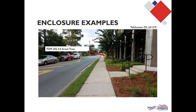Street trees can also create enclosure. In this example, the trees are on the outside of the sidewalk, but you could also place them between the sidewalk and the roadway. At FDOT, trees must be at least 18 inches behind the curb, so you'd need a wider planting strip for that arrangement. That would provide even greater enclosure around the street. The building itself is also providing some level of enclosure here.